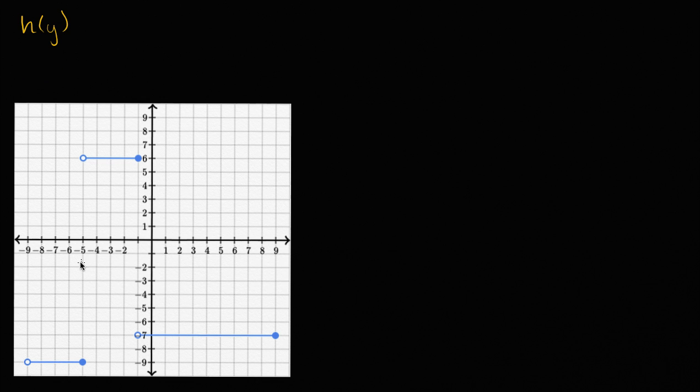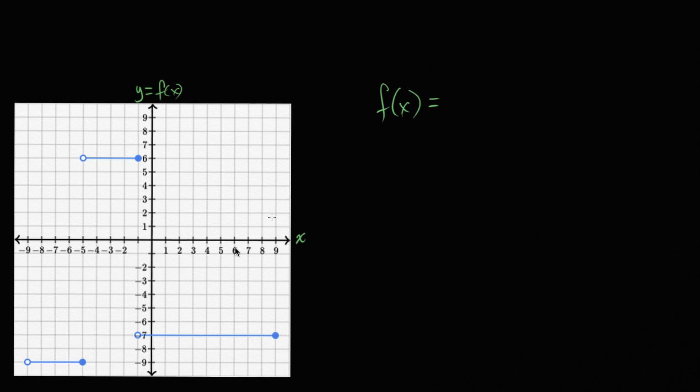Let's take a look at this graph right over here. You can see that the function is constant over this interval for x, then it jumps up in this interval for x, and then it jumps back down for this interval. Let's think about how we would write this using function notation, with the x-axis and the y equals f of x axis. Our function f of x is going to be equal to — there are three different intervals.